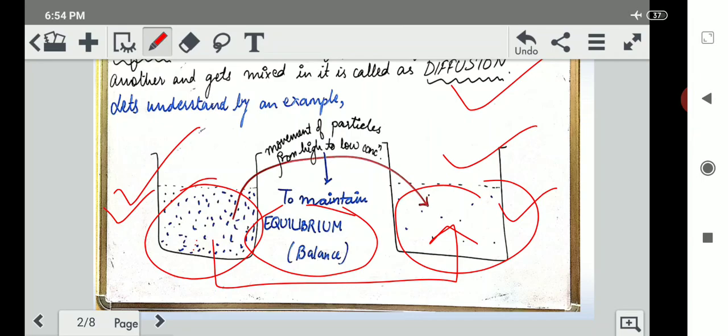This is the movement of particles from region of high concentration to low concentration to maintain equilibrium. You can take an example: when we are playing in a team, we divide two teams. If one team has six members and the other team has eight members, what do we do? We shift one member from the eight to the six to have seven-seven members.